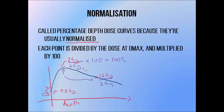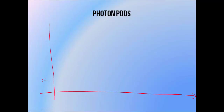This gives the dose at D-max a value of 100%, and the dose at every other point is expressed as a percentage of this dose. For example, 1.6 Gy is 80% of 2 Gy, so this becomes 80%, and 0.2 Gy is 10% of 2 Gy, so this becomes 10%. This is why it's called a percentage depth dose curve. The shape of a PDD curve depends heavily on the beam energy.